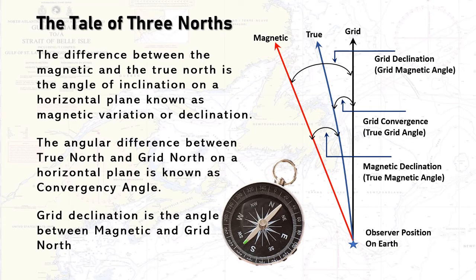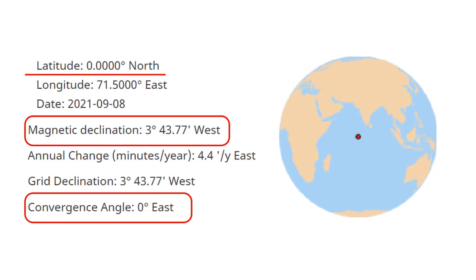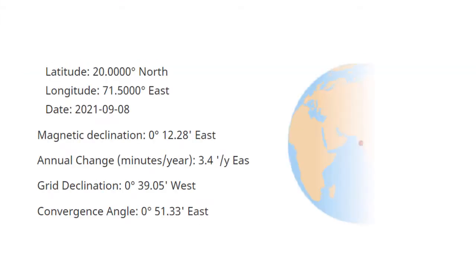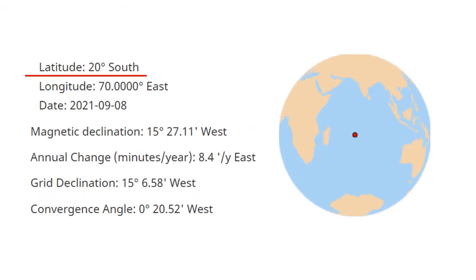The relative direction of true, grid, and magnetic north will depend entirely on where on earth you are and where on the map projection you are. Here are a few examples — you can see how the magnetic variation and convergence angle changes with the changing latitude.